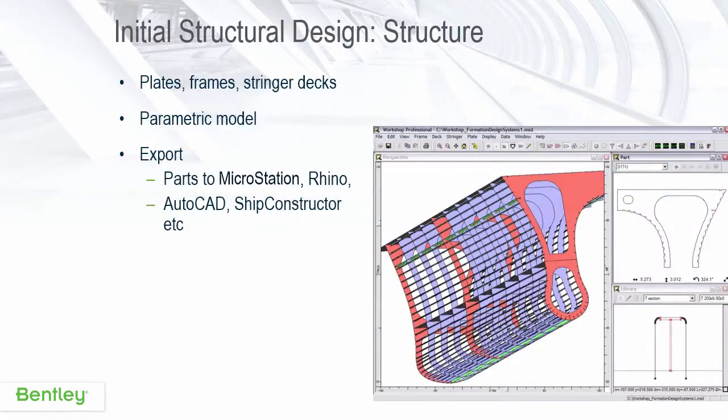For structural design, we have an initial structure module for designing the principal structural elements, which are dependent on the hull shape. That includes shell plates, frames, stringers, and decks, and they form a parametric model which can update as your hull shape updates. There's great interoperability with MicroStation, Rhino, and other downstream detailing systems.